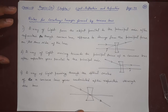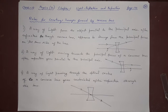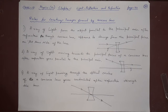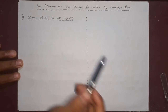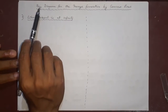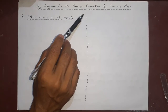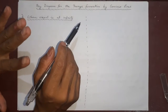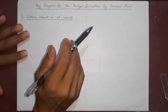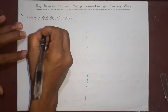These are the three rules for concave lens image formation. Now for the second part: ray diagrams of image formation by a concave lens. There are four — actually six — different cases. Almost all of them produce the same type of image.